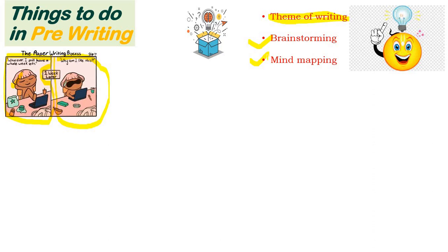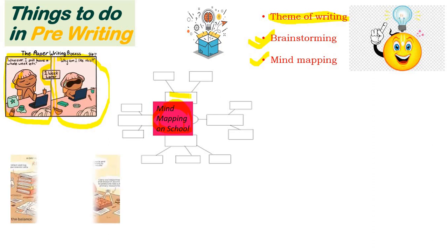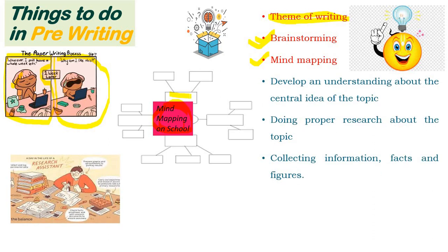What is the difference between brainstorming and mind mapping? Brainstorming is basically storming your brain so that you can come up with an idea about the topic you want to write. Mind mapping comes after — once you understand your topic, you find out what will be in that writing, what will be the steps and sequences. For example, if through brainstorming you decide to write about school, in mind mapping you will plan what kind of writing you want and how you will write it. Then develop an understanding about the central idea — what exactly do you want to tell.